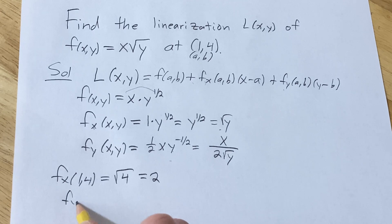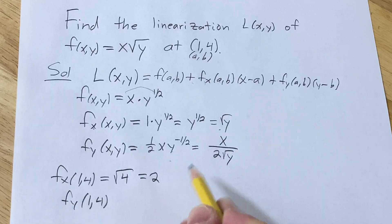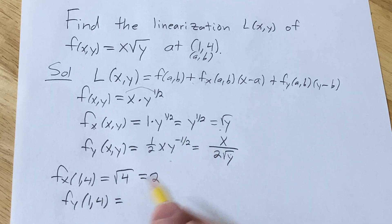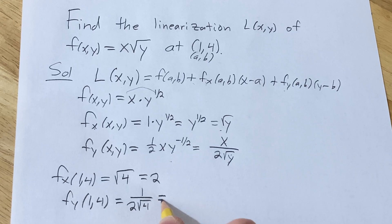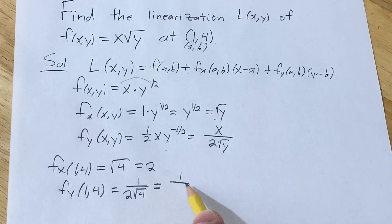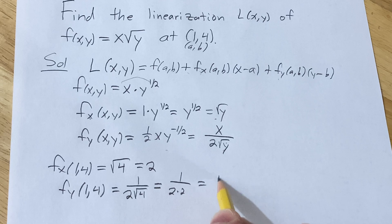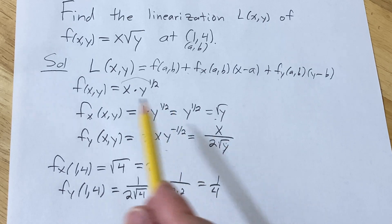And plugging in (1,4) into this one here. Let's be careful here. So x is 1 over 2. And then that's going to be 4. So we have 1 over 2 times 2. So we have 1 over 4. Alright, now we're in a good place.